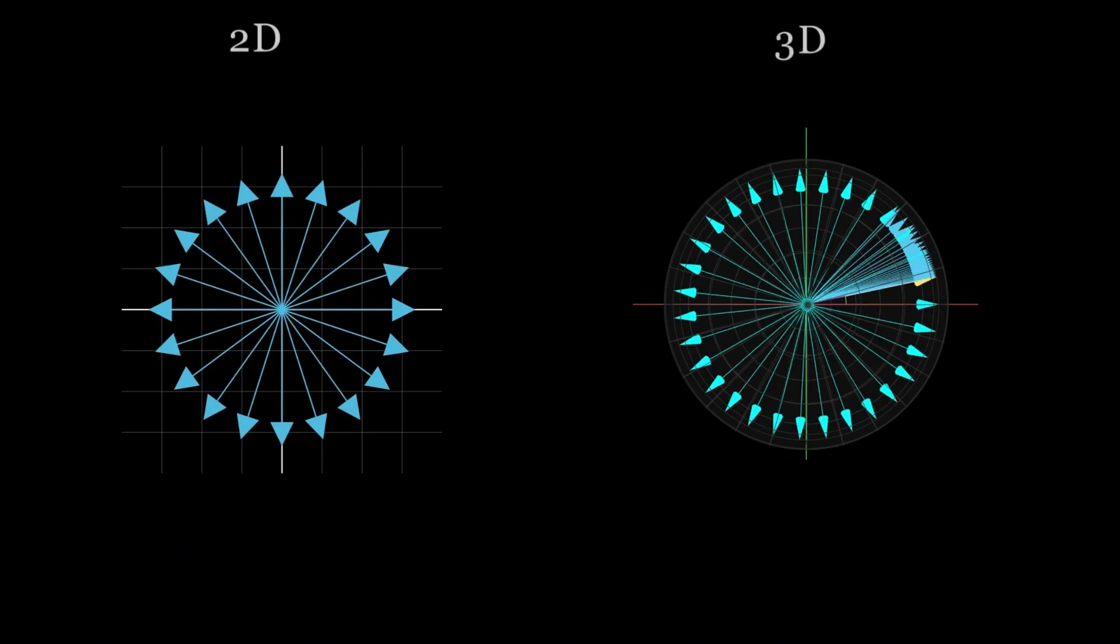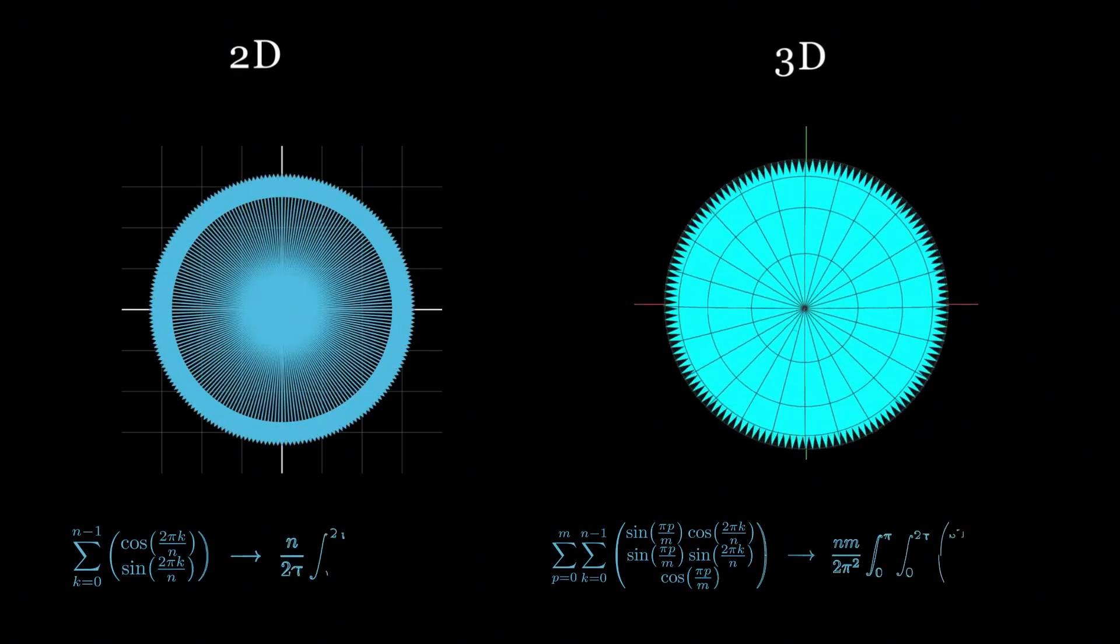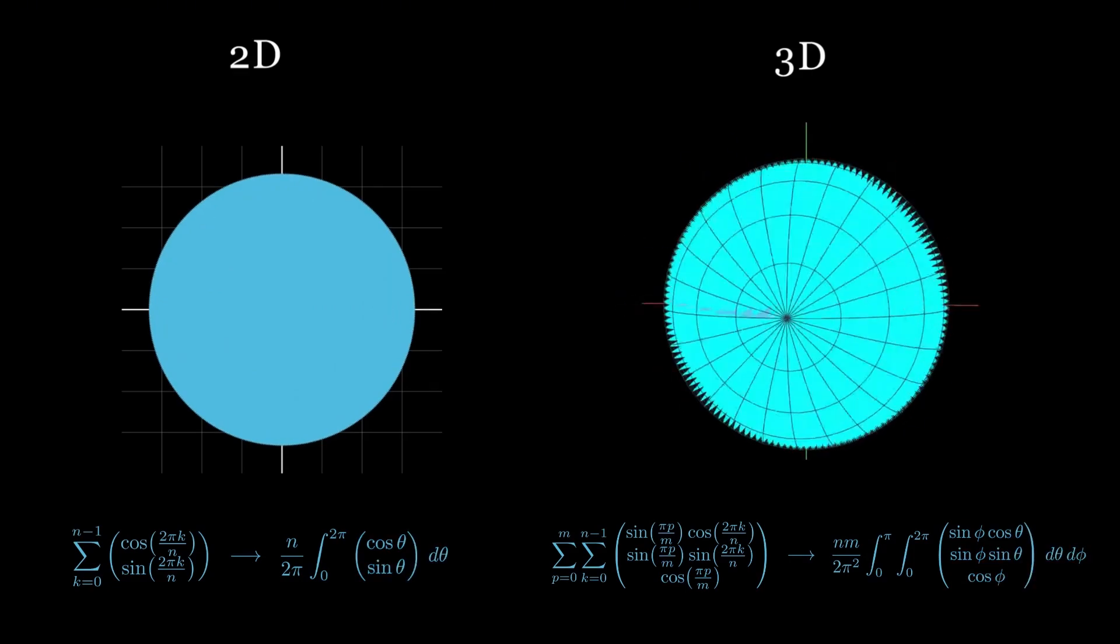Up to this point, we have used sums, trigonometry, and integrals to understand why symmetric vector arrangements cancel out. I have always been drawn to this kind of analytic proof. But our argument in three dimensions leans more towards the continuous case.